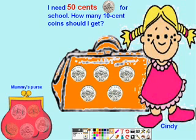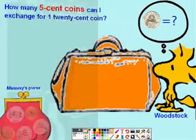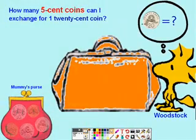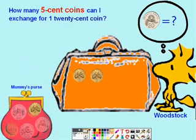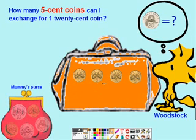Now try this one with me. How many 5 cent coins can I exchange for 20 cents? Again, start from the coin's own value — in this case 5 cents — and count forward in the coin's value. Now count along and remember to stop counting at 20. Here we go: 5, 10, 15, 20. So we can say that we exchange 4 five-cent coins for 1 twenty-cent coin.